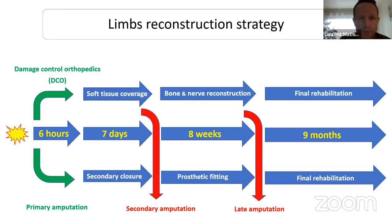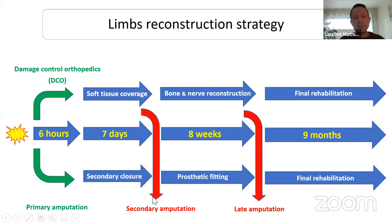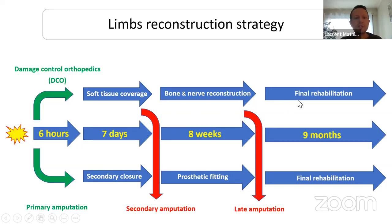I already showed you our strategy in limb reconstructions with two options. After the injury: limb salvage — the upper line — or amputation, primary amputation, or in case of bad evolution in the following days. This is the 6-7-8-9 sequence. Damage control orthopedics must be performed within six hours — as early as possible. We will now talk about limb salvage, the first line.